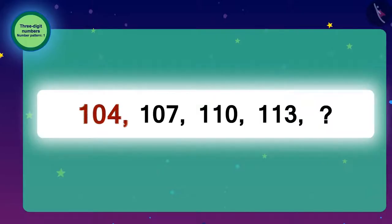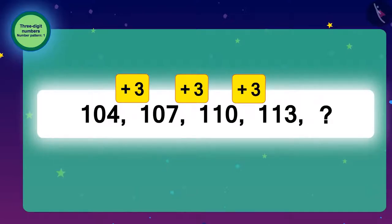To get from 104 to 107, we have to add 3 to 104. Then to get from 107 to 110, we will add 3 to 107. Similarly, we can add 3 to every number and find the next number. To find the next number, we have to add 3 to 113.